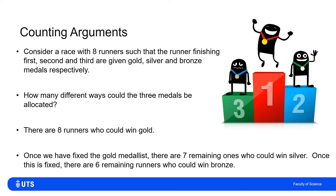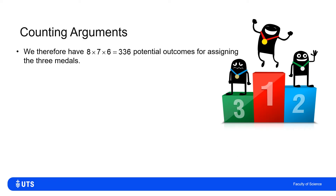Once I have fixed those three, I don't care about where the other five runners finished in this problem. When we enumerate this — eight choices for gold, then seven remaining for silver, then six remaining for bronze — that gives three hundred and thirty-six potential outcomes for assigning the three medals in any given order.